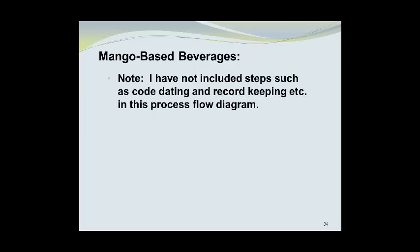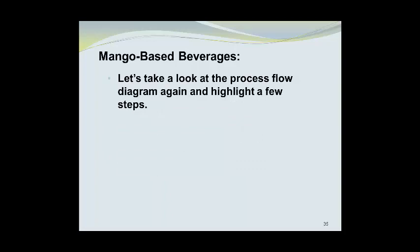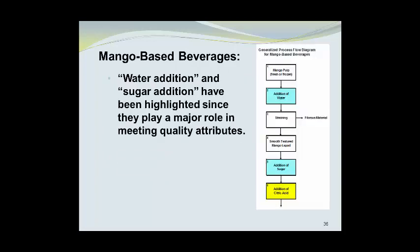Note that steps such as code dating and record keeping are not included in the process flow diagram, though these are extremely important steps and code dating is actually a critical control point as previously mentioned. Water addition and sugar addition have been highlighted since they play a major role in meeting quality attributes, but they are not critical control points — no one will become ill from slightly too much or too little sugar, which is strictly a quality issue.